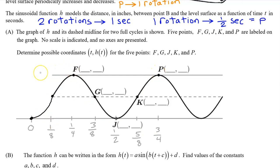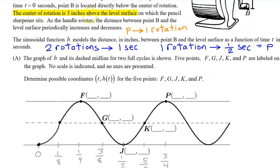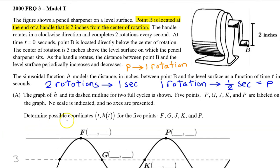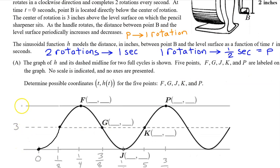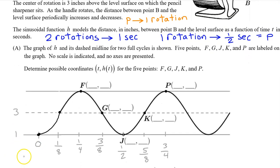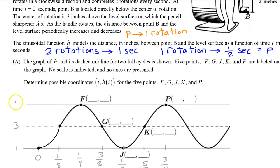How about the output values? The center of rotation is three inches above the level surface. So the midline is at a height of three. Point B is located at the end of a handle that is two inches from the center of rotation. So at its lowest point, point B will be two inches below the center of rotation. In other words, two inches below the midline. And at its highest point, point B will be two inches above the midline. So two inches below the midline will be one inch above the level surface. And two inches above the midline will be five inches above the level surface. So now we have the output values for all five points.